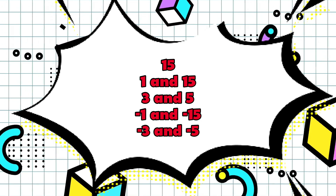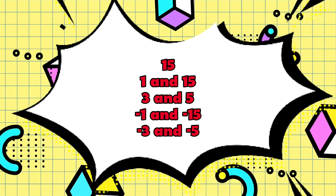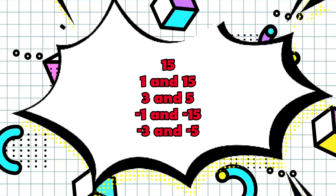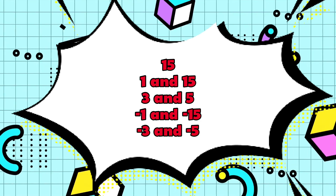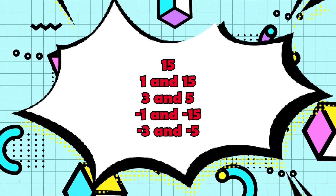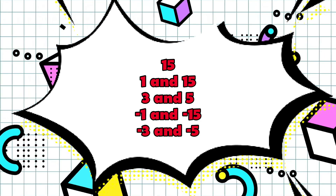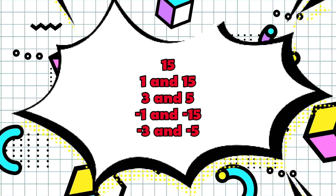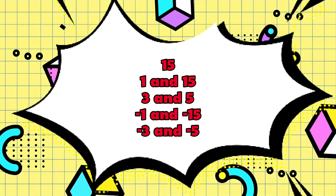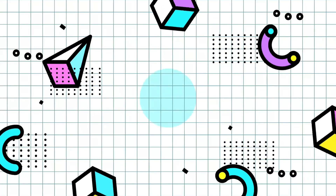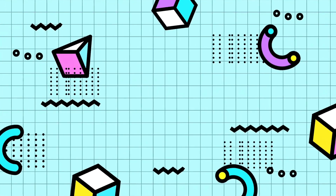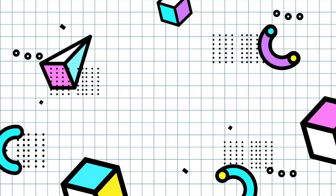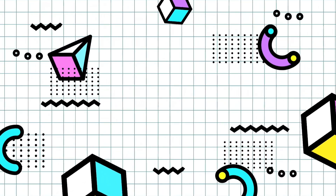Example: 15. The factors of 15 are 1 and 15, 3 and 5, negative 1 and negative 15, and negative 3 and negative 5. If we are going to multiply these pairs of numbers, this will give us the result of positive 15.